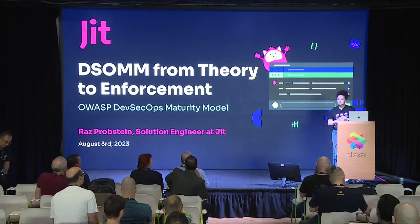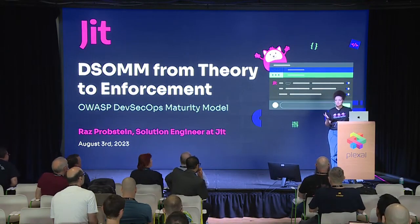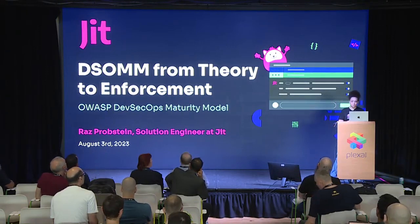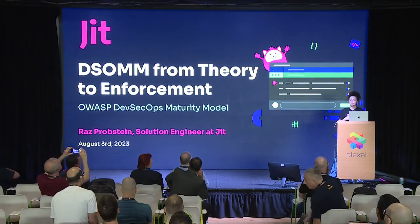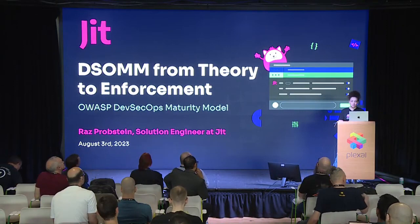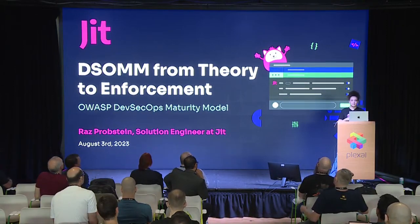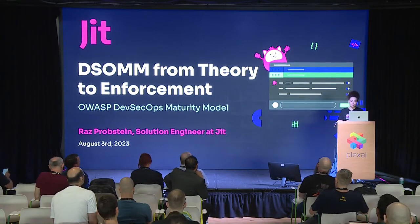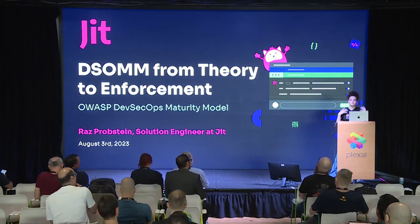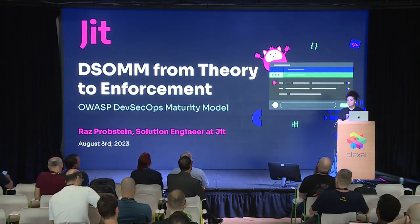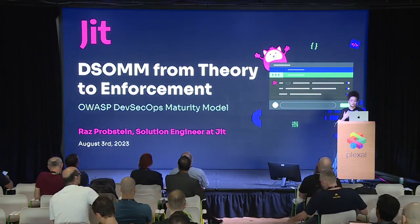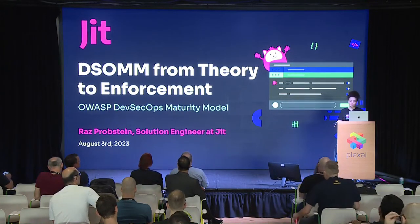So let's get started. Today I want to talk about DSOMM, which is the DevSecOps Maturity Model — the OWASP DevSecOps Maturity Model. I'll talk a little bit about maturity models, and then we'll get into the practical details of DSOMM. This is just me bringing forward a lot of the learnings we've had at JIT when we implemented DSOMM in our dev organization, and I'm excited to share that with you today.